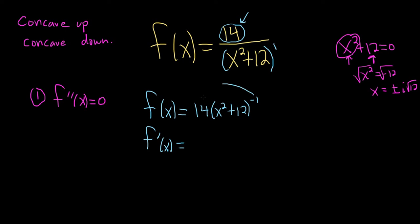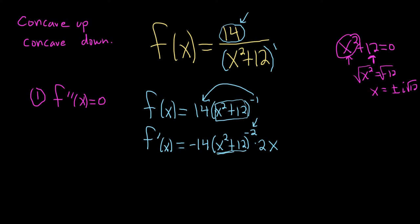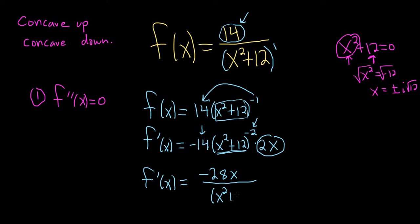Here we use the chain rule. Bring down the negative 1, so you have negative 14 times (x squared plus 12), leave the inside untouched, subtract 1 to get the exponent negative 2, then multiply by the derivative of the inside. The derivative of x squared is 2x and the derivative of 12 is 0, so we just get 2x. Multiplying 2x by negative 14 gives f prime of x equals negative 28x over (x squared plus 12) squared.